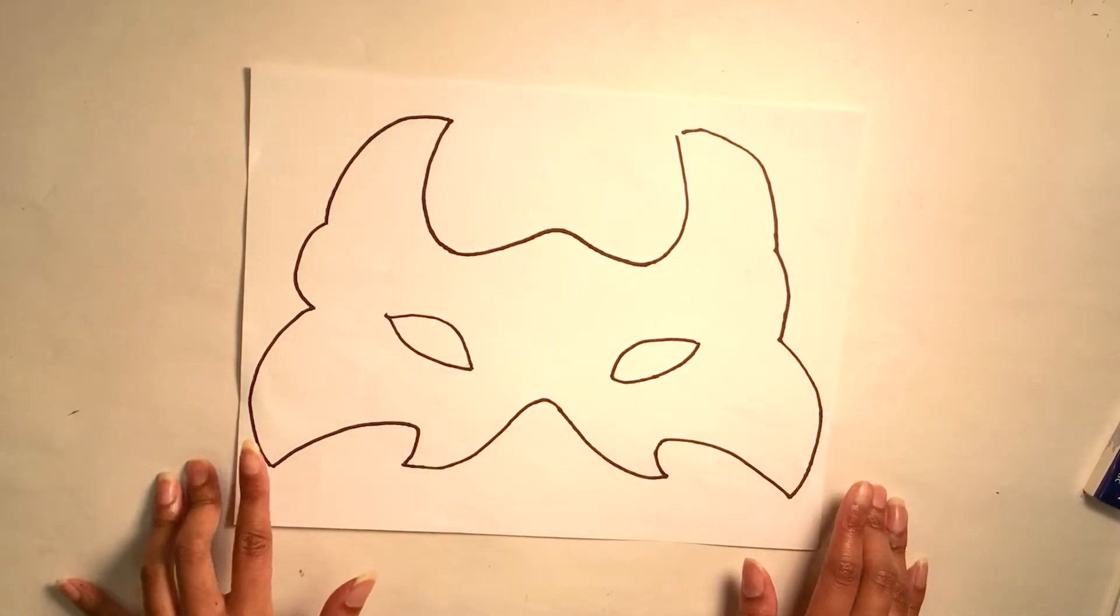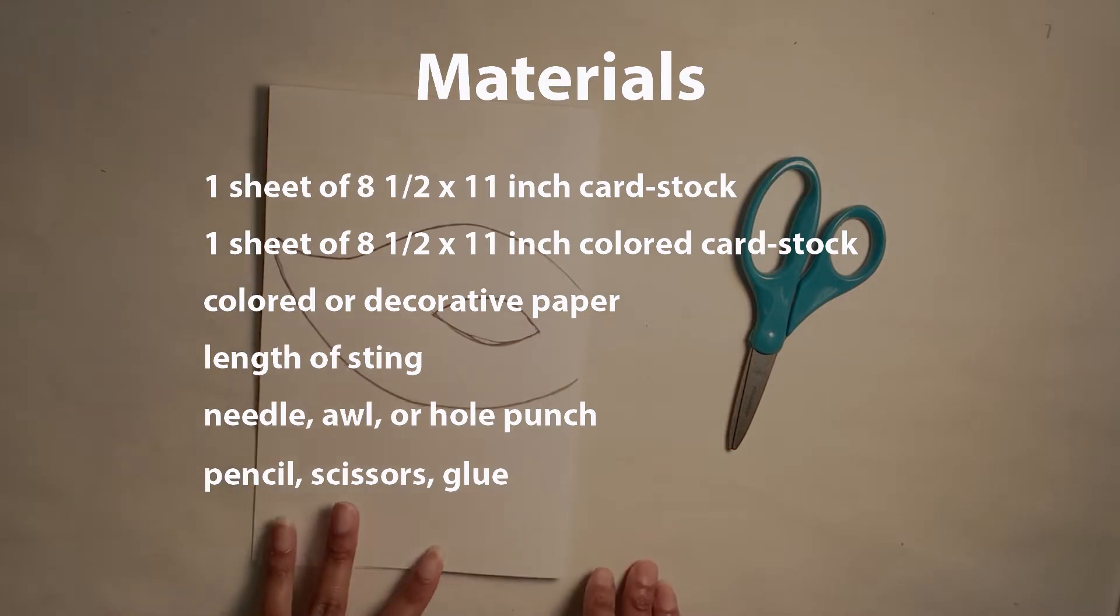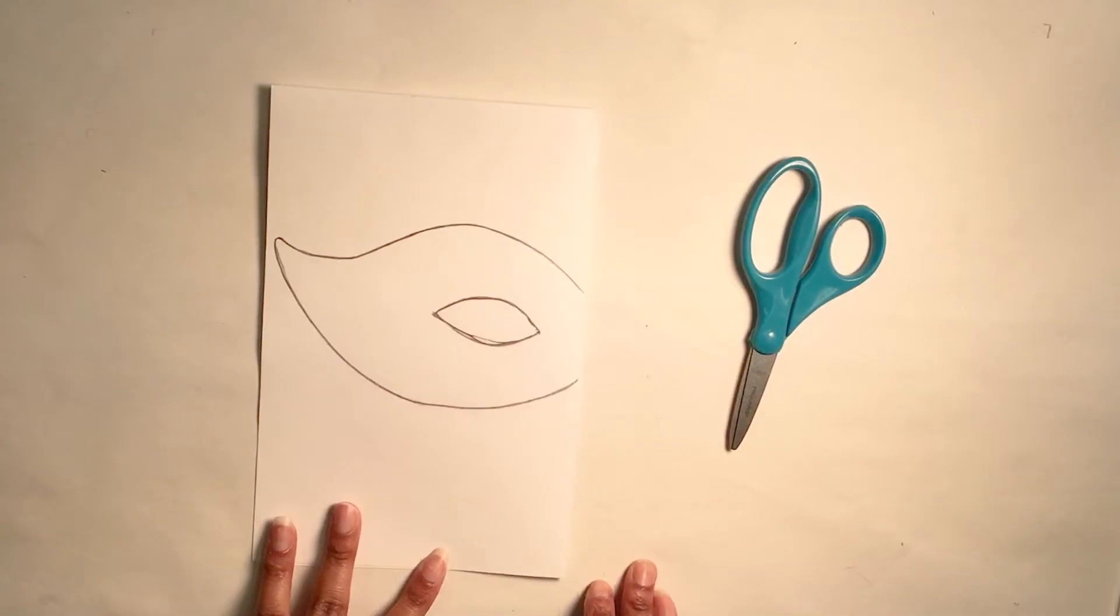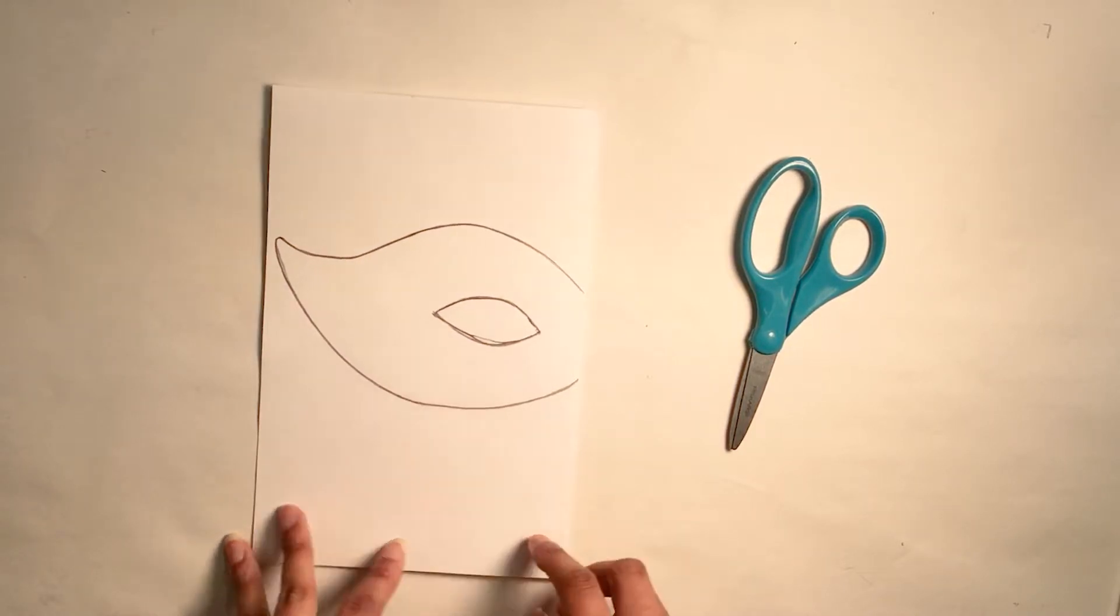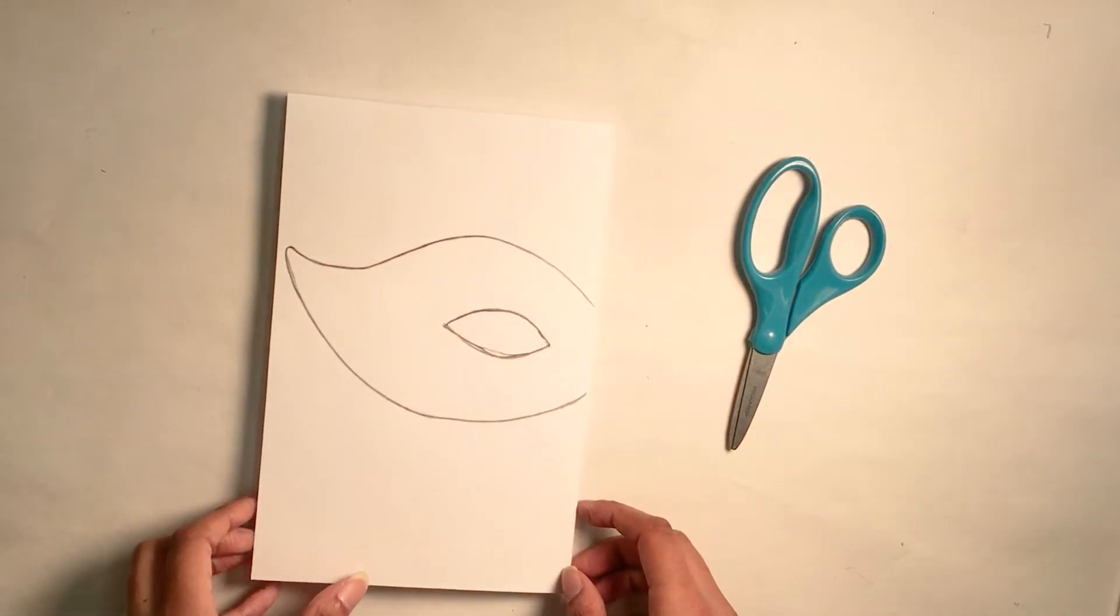For this demo we'll be using the wolf mask. So before we create our actual base, we need to create a template. The template should be made out of cardstock and should be roughly around 8.5 by 11 inches. If you're making this for a child you would want it to be smaller and if you want a bigger mask you can make it slightly bigger.